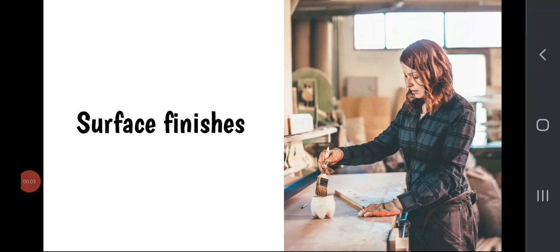This video is for National 5 Design and Manufacture. We're going to look at surface finishes - the different types of finish that we can put on a surface, and along the way we'll look at some techniques for getting a really good finish. But what do I mean by a surface finish? It's the coating or treatment that you put on a surface to make it appear awesome, or to protect it from the weather and make it more durable.